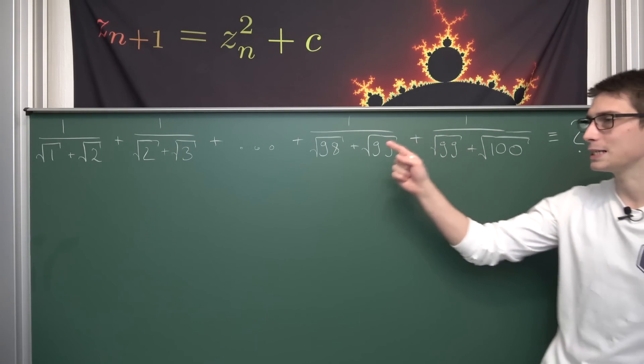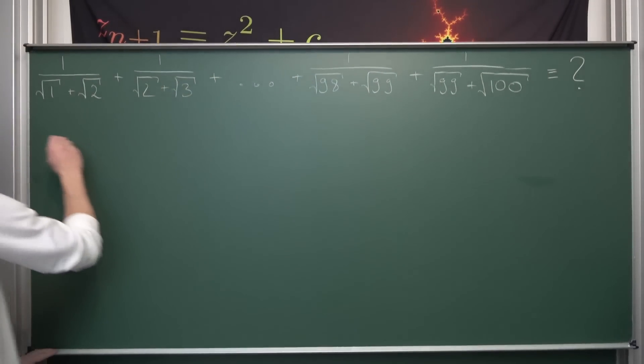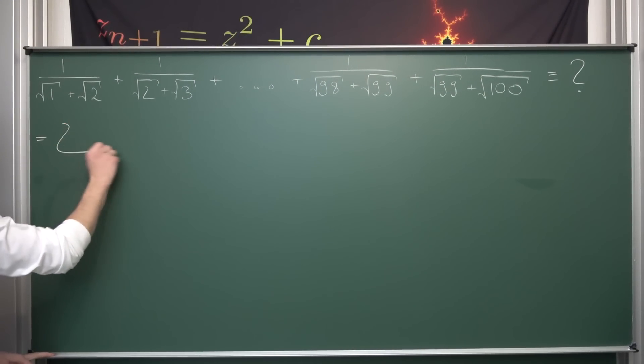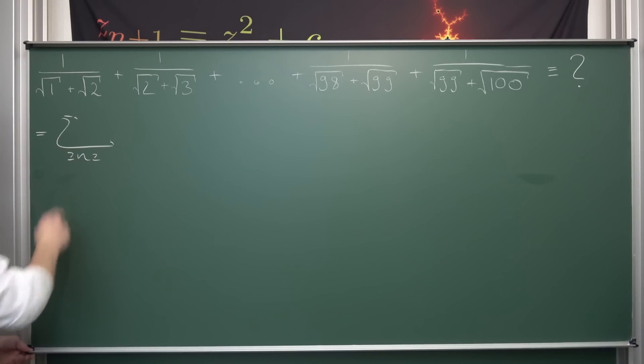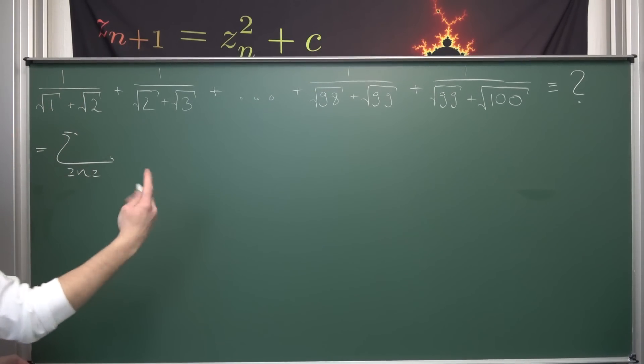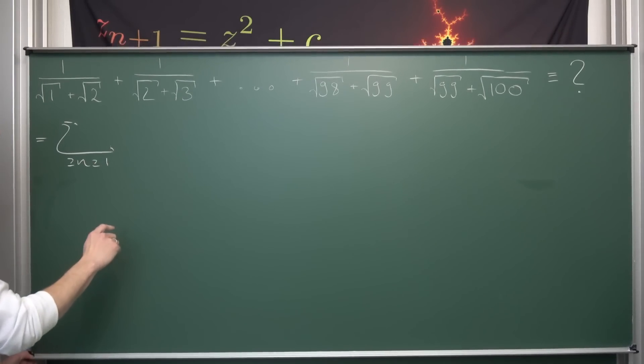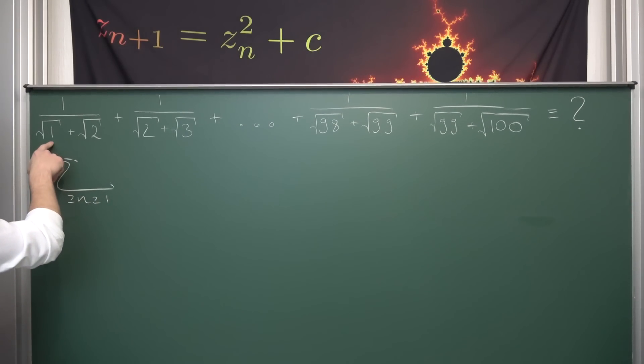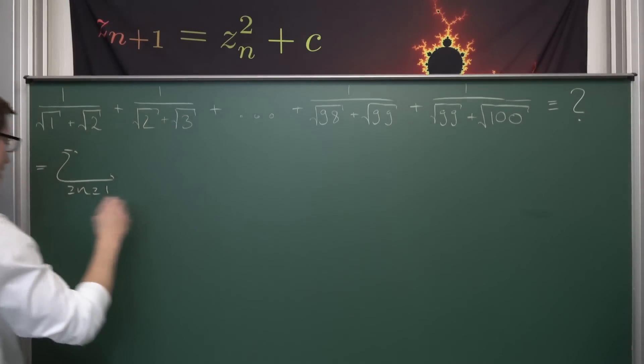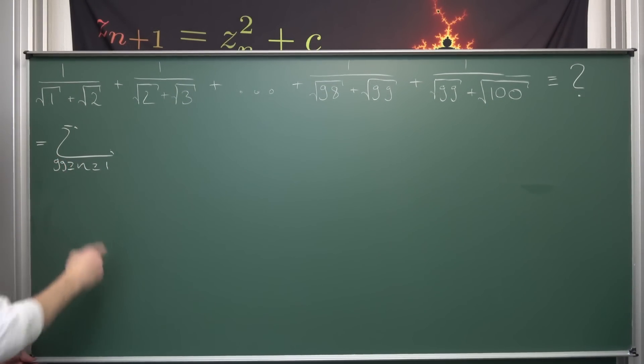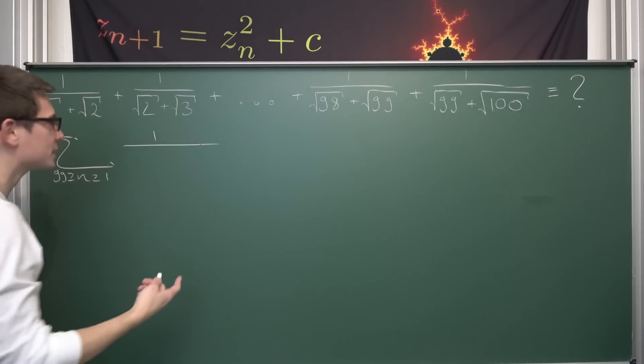At first I would like to rewrite this into summation notation because I don't want to write all this out all the time. So this right here is actually equal to a finite summation where our running index is going to be bounded between, okay, what is the lowest running index that we have? I mean one. We're going to start at one up until, and now we just need to take a look at the smaller number down here in the denominator, namely up until 99.